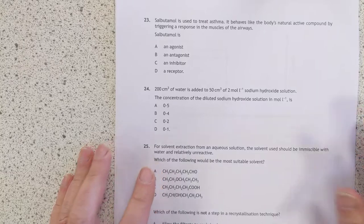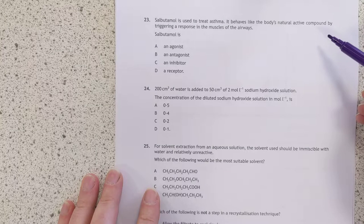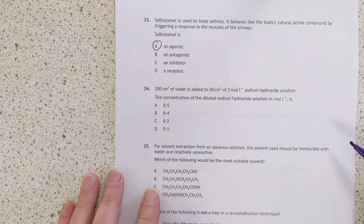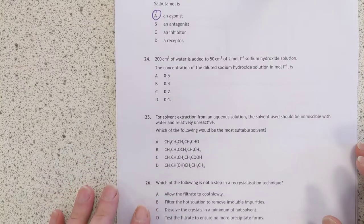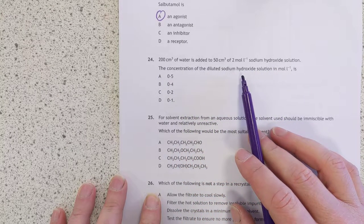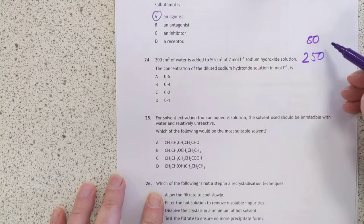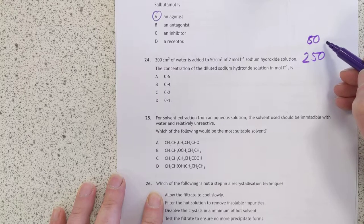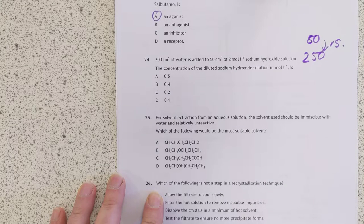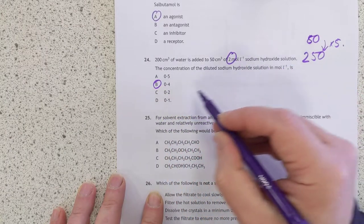23. Salbutamol is used to treat asthma. Now, if it behaves like one of the body's chemicals, then it is an agonist. Number 24. 200 mls of water is added to 50 mls of 2 molar sodium hydroxide. The concentration of the diluted solution is... So that means our final volume is 250. We started with 50. So that's a 5. Sorry about that. So that is a 5 times dilution. So I'm going to go with 0.4 because we've taken our original concentration and divided by 5, which is 2 fifths, which is 0.4.